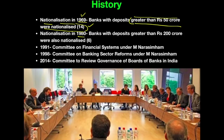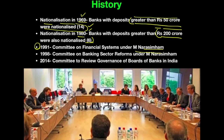Nationalization also took place in the year 1980 — this was the second phase — wherein banks with deposits greater than Rs. 200 crore were nationalized and a total of 6 banks were nationalized. A very small number of students would be aware of the Rs. 200 crore deposit threshold. In 1991, a committee was established called the Committee on Financial Systems under M. Narasimham — this answers the first question we picked up.